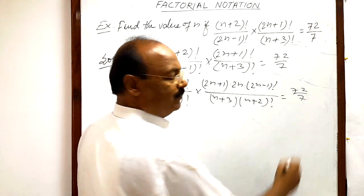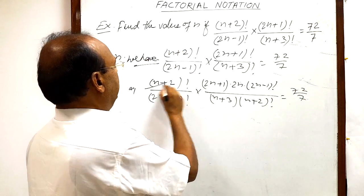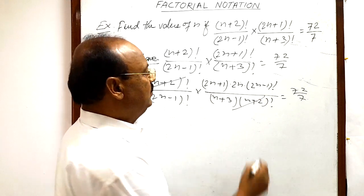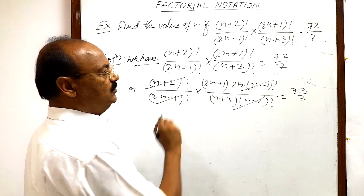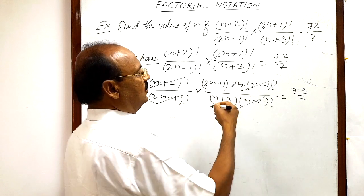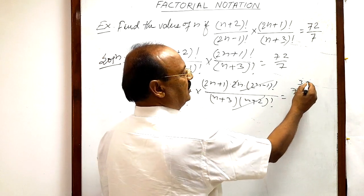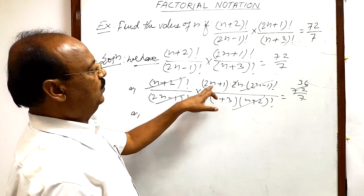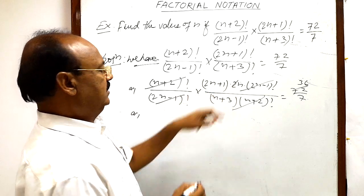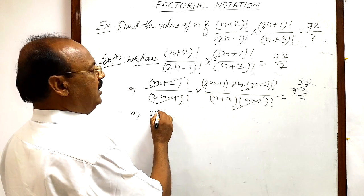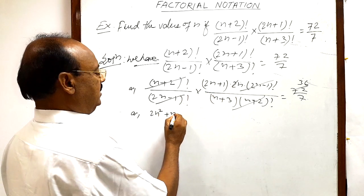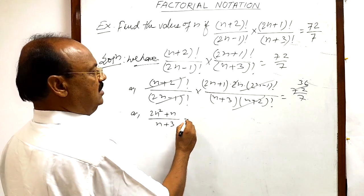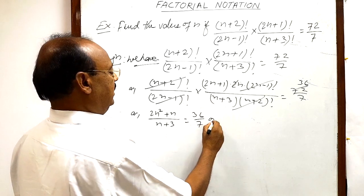So we have (n+2)! / (2n-1)! times (2n+1) × 2n × (2n-1)! / [(n+3) × (n+2)!] = 72/7. The (n+2)! cancels from numerator and denominator, and the (2n-1)! cancels out as well. The 2 cancels with 72 giving 36, so we get (2n+1) × n / (n+3) = 36/7.